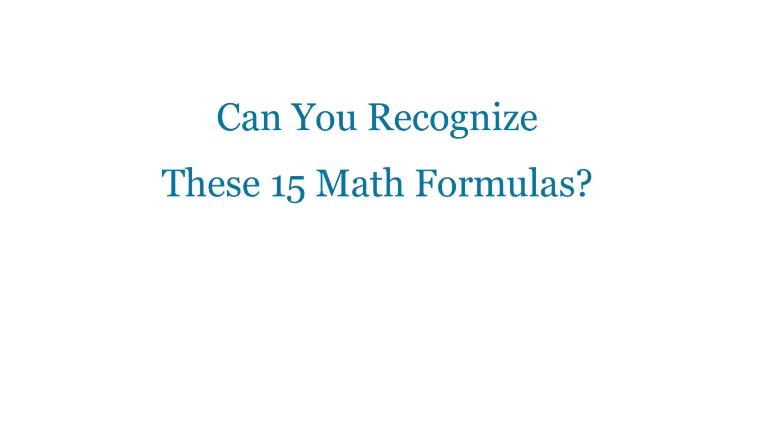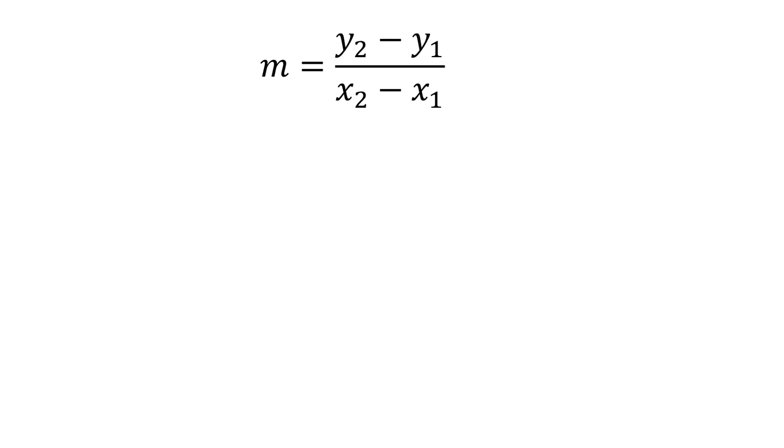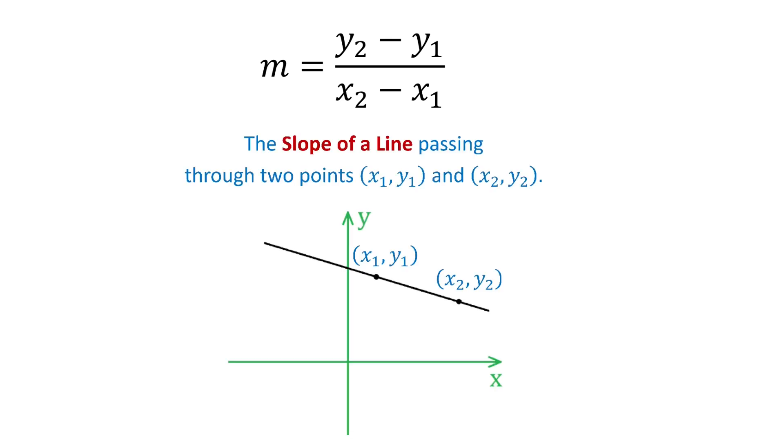Can you recognize these 15 math formulas? The first one is m equals y2 minus y1 over x2 minus x1. Take a moment and see if you can recognize this formula. This is the slope of a line passing through two points x1, y1 and x2, y2.